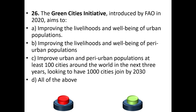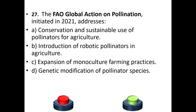Question 26: The Green Cities initiative, introduced by FAO in 2020, aimed to: improve the livelihoods and well-being of urban populations, improve peri-urban populations' well-being, improve urban and peri-urban populations in at least 100 cities in three years, and have 1,000 cities join by 2030. The answer is option D — all of the above.